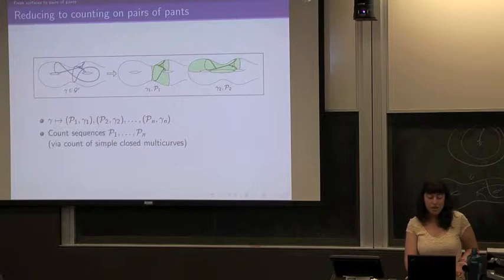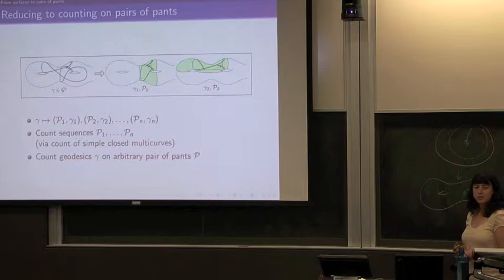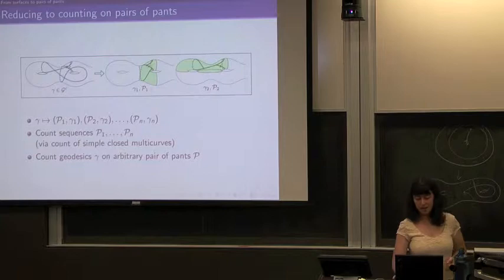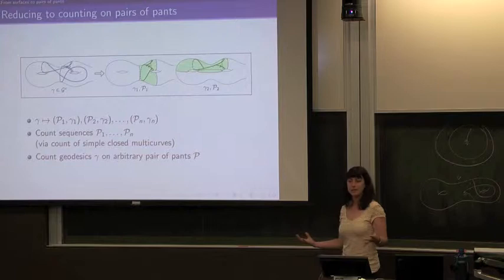This is a bit of a lie — this method doesn't quite work directly, but the idea is to find pairs of pants or simple closed curves that the geodesic traces out and that we can put back together to make the original geodesic. How we count: we count the sequence of pairs of pants, or a sequence of simple closed curves, and then we count geodesics on an individual pair of pants. Pairs of pants aren't so hard to count because they're just simple closed multi-curves, and we know how to count those.